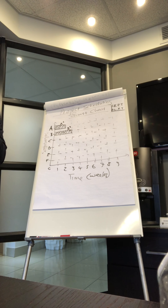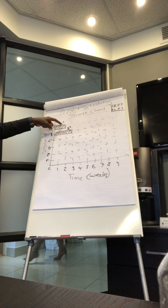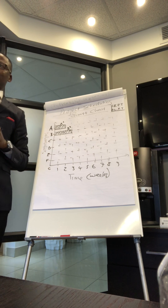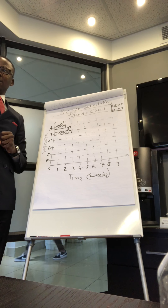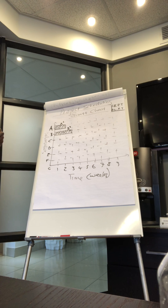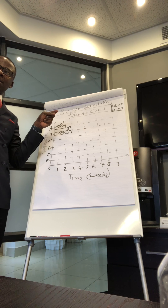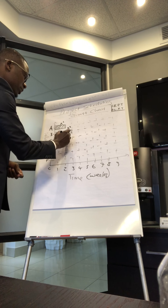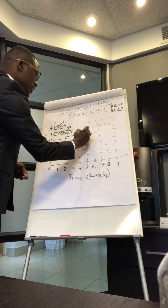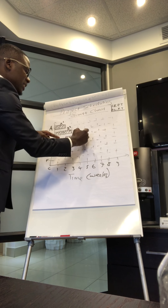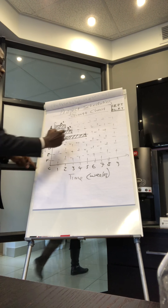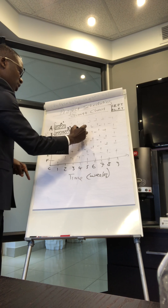Now it gets a bit interesting. Activity C is the kind of activity which cannot start until A is finished, and it takes three weeks. Since it depends on Activity A to finish, the bar will start at week two — where A ends — and then we take three weeks from there. So this is Activity C depending on A, taking three weeks.